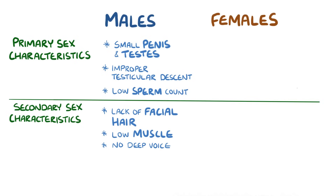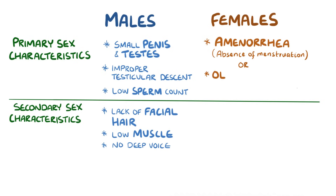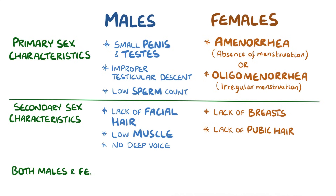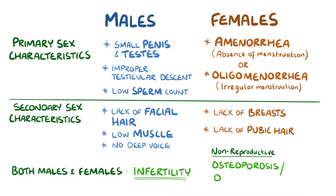In females, primary sex characteristic dysfunction includes amenorrhea or absence of menstruation, or oligomenorrhea or irregular menstruation. Secondary sex characteristic dysfunction includes a lack of breast development and pubic hair. For both males and females, Kallmann syndrome often leads to infertility. Other non-reproductive symptoms include osteoporosis or osteopenia, because testosterone and oestrogen are protective against bone resorption.